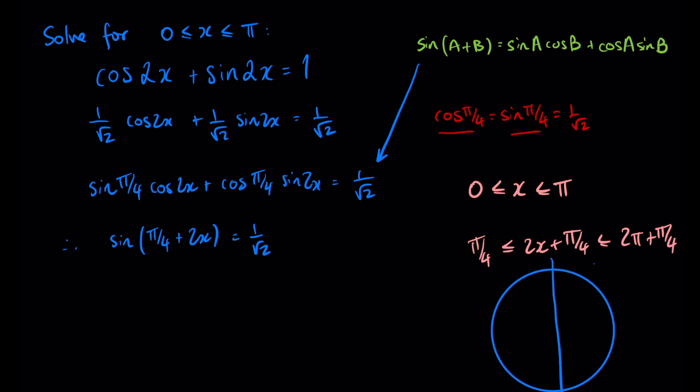What we're going to have here, we know the exact value for sine of something equal to 1 on root 2 is π on 4, so our reference angle is π on 4.